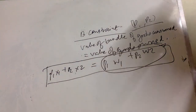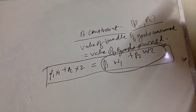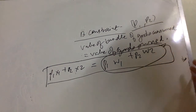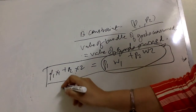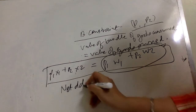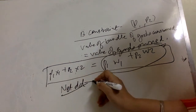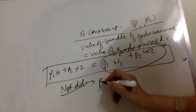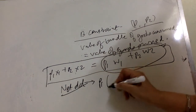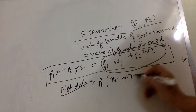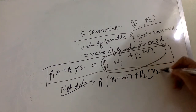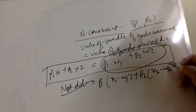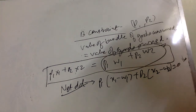Taking everything to the left side, the budget constraint becomes: p1·(x1 − w1) plus p2·(x2 − w2) equals zero. We assume no saving, so the entire value of the endowment is spent on goods x1 and x2.